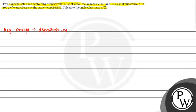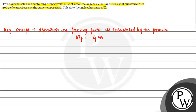Depression in freezing point is calculated by the formula: delta Tf equals Kf into molality, where delta Tf is depression in freezing point, Kf is the cryoscopic constant, and m is molality.